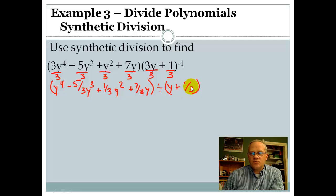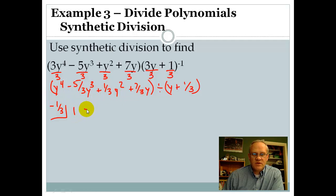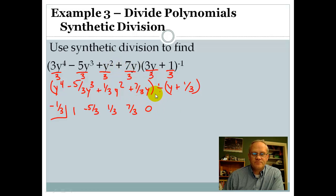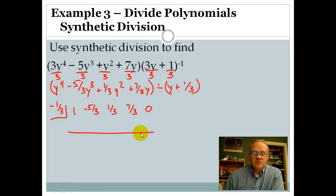Since this is now y plus 1/3 in the divisor, we put a negative 1/3 in the box. Then list out the coefficients: 1, negative 5/3, positive 1/3, 7/3. There's no constant term — it went y to the 4th, y to the 3rd, y squared, y — so we need a 0 at the end. Leave these exactly as they are; don't try to convert to mixed numbers. It'll be easier to deal with them in this form.